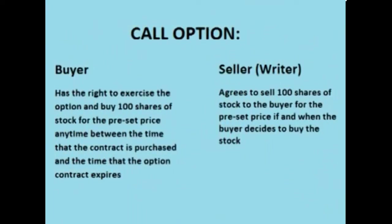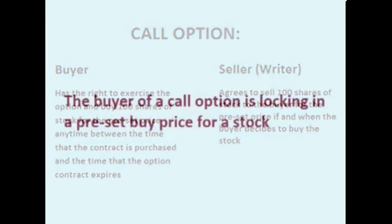A trader is bullish on silver short term, so he wants to trade a thousand shares of SLV. Instead of buying a thousand shares of SLV, the trader buys 10 February SLV call options that expire in about 6 weeks.